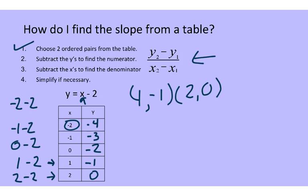This is our formula for finding the slope when we have two ordered pairs. This is the x1 value, this is the x2 value, this is the y1 value, and this is the y2 value. Please make sure you keep them in order — one set of ordered pairs are the 2 values and one set are the 1 values — because if you don't, you'll end up with the wrong positive or negative.